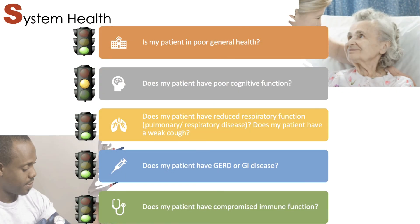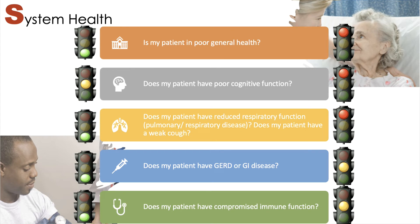Lastly, we have system health. Our gentleman is in good overall general health. He does have some diminished cognitive function, but we hope that will improve. He does not have decreased respiratory function or respiratory disease, has a very strong robust cough, no GI disease, and no compromised immune function — overall a pretty healthy guy. Our elderly lady, being less modifiable, is in poor general health. Her cognitive function is compromised, and her respiratory function is greatly limited as a result of her COPD. We don't know if she has GERD, but based on her age we're assuming at least some of that, and we assume some compromise in immune function as well.